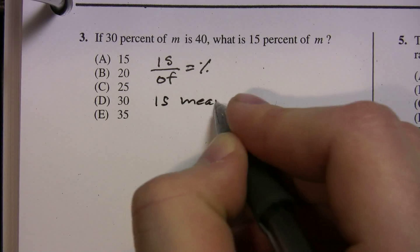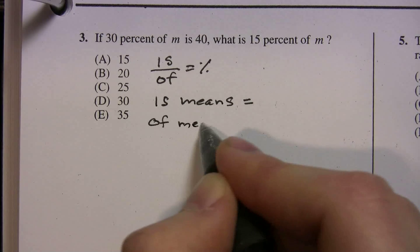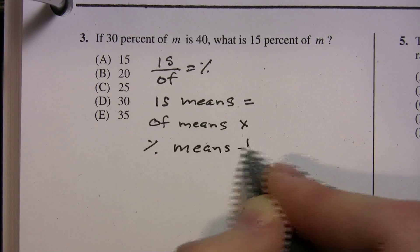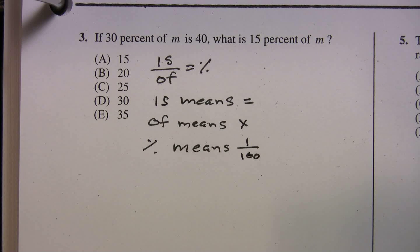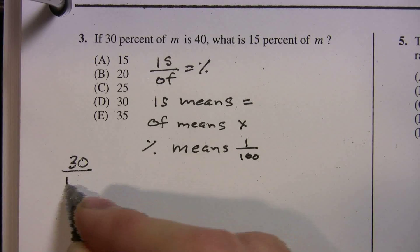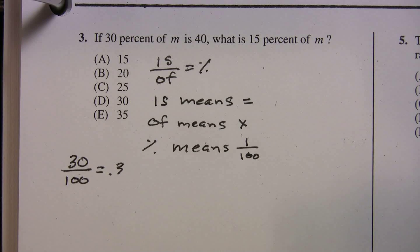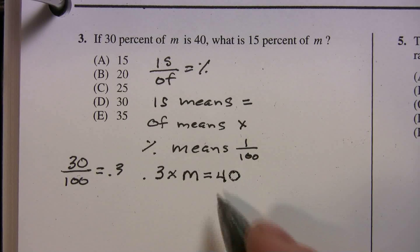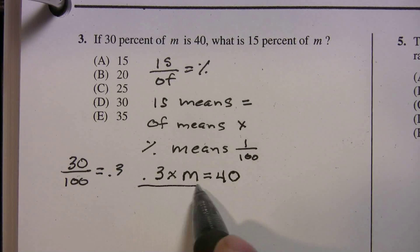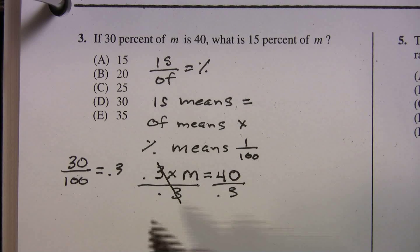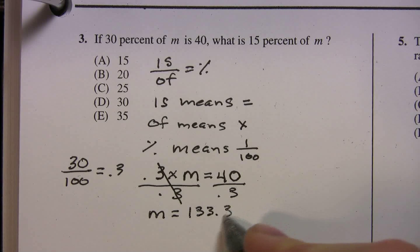Anytime you see the word is, you're going to write an equals. Anytime you see the word of, of means multiply. Anytime you see the percent sign, the percent sign means 1 over 100. So let's translate this back piece by piece. 30%, well we can write 30% is 30 over 100, and you can use your calculator to find out that that's .3. So now we have .3 of M is 40. So I'm just translating straight across. If you have your calculator handy, we're going to divide by .3. 40 divided by .3, and you should get M is equal to 133.3 repeating.